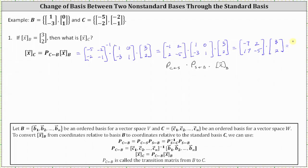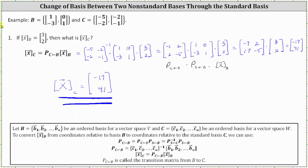Now for the last product: the first entry is (-7)(3) + (2)(2) = -17, and the second entry is (17)(3) + (-5)(2) = 41. So the coordinates of vector X relative to basis C are [-17, 41]. I hope you found this helpful.